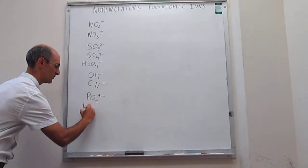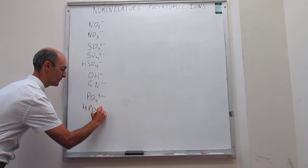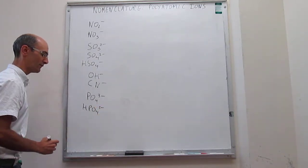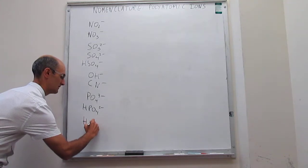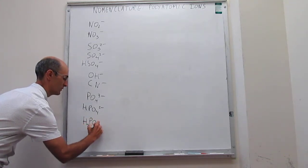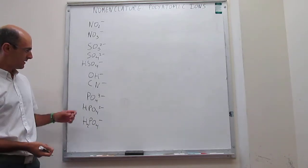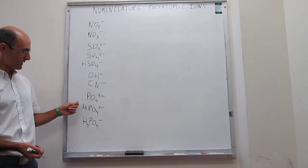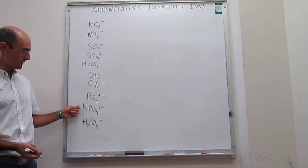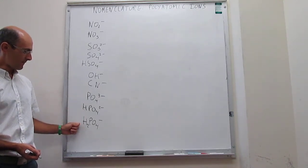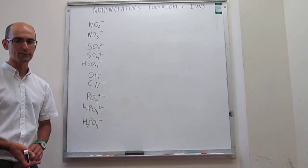And then the next two compounds are going to have hydrogen atoms in them. So that will be hydrogen phosphate. And this is going to be H2PO4- that will be dihydrogen phosphate. PO4-3- phosphate. HPO4-2- hydrogen phosphate. H2PO4- that is going to be dihydrogen phosphate.